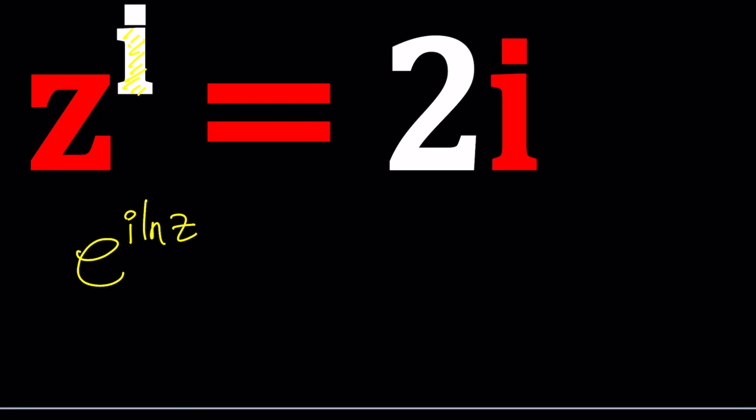Whenever you have Z to the W, you can write it as E to W LNZ. So it's the complex exponentiation, basically.